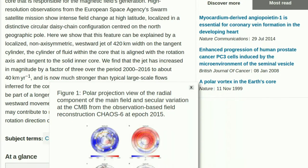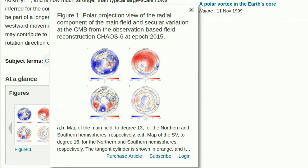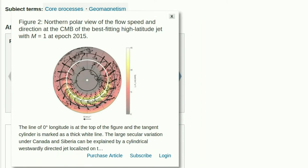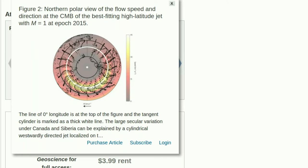European Space Agency satellites have detected a large jet stream of liquid iron flowing beneath Earth's surface at a quickening pace. The stream is moving westward beneath Canada and Russia at a pace of 30 miles per year.